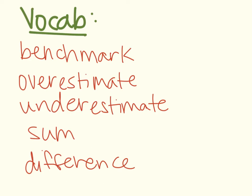Then we have two vocabulary words dealing with estimation: overestimate and underestimate. An overestimate means that you are rounding up, or rounding the number to a bigger number than what it's actually worth. Underestimate means that you are rounding down so that the value of the fraction or number is less than what the number is actually equal to. Finally, sum is the answer to an addition problem and difference is the answer to a subtraction problem.